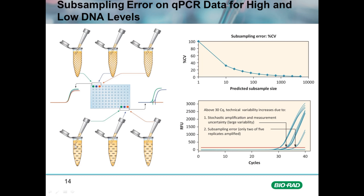Subsampling error is the error associated with taking a portion of the cDNA or genomic DNA sample used for qPCR. We only take a sub-portion of the sample, and because the DNA is so dispersed in the tube, it is based on the chance that in that subsample there will be a consistent number of target molecules. The consistency of target molecules taken decreases dramatically as the number of target molecules in the sample decreases.